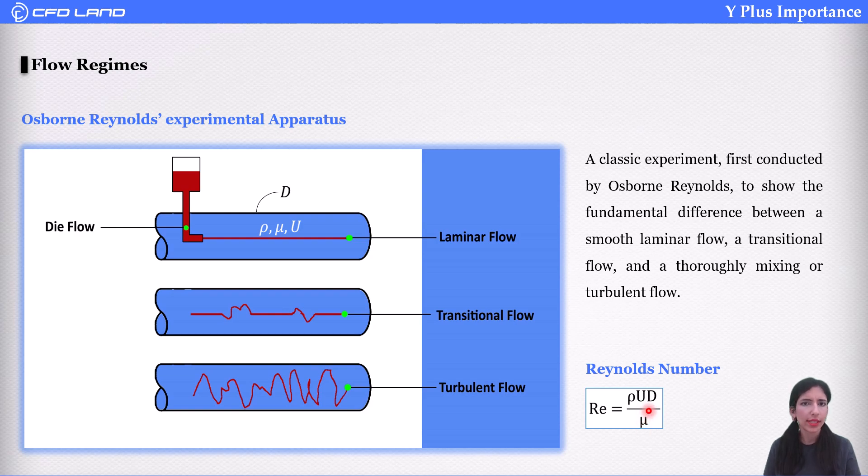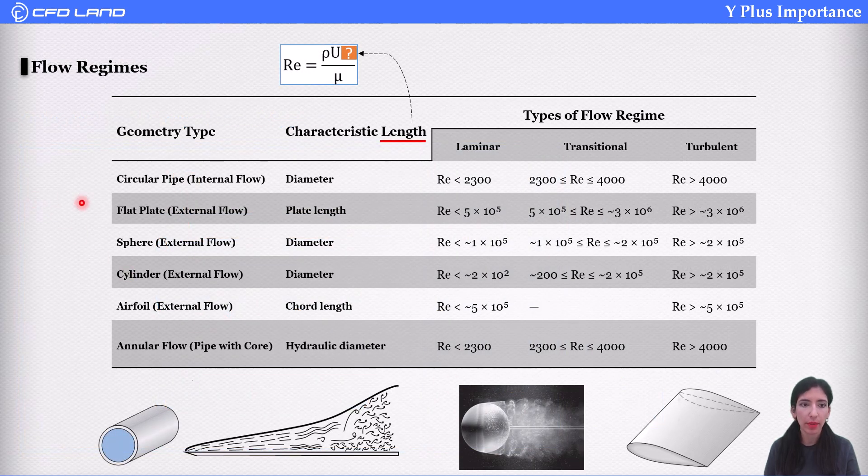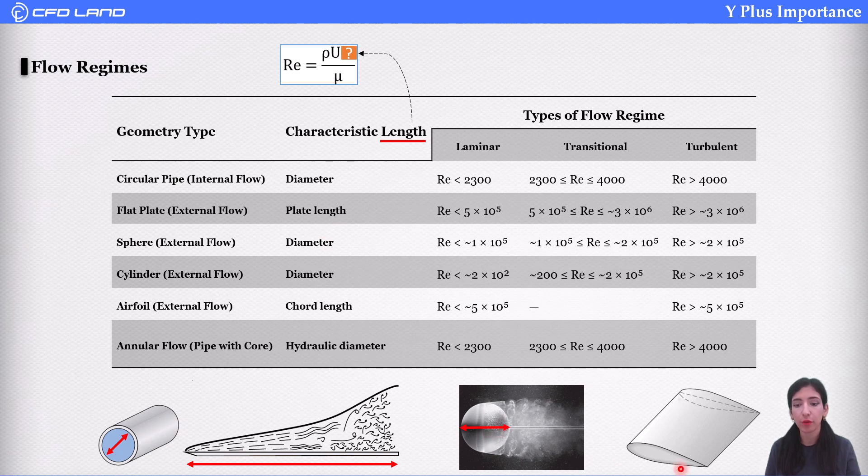But what is characteristic length? Well, based on your geometry, characteristic length is defined differently. For example, for an annular flow, it's hydraulic diameter. For a flat plate, it's plate length. For a sphere, it's diameter. And for an airfoil, it's chord length.